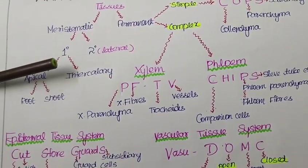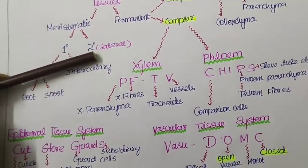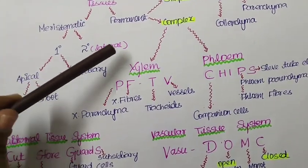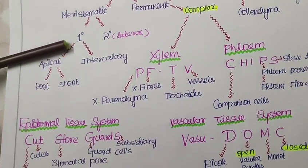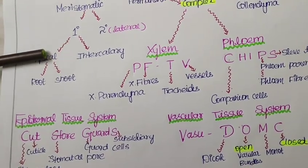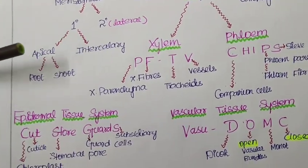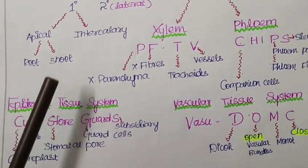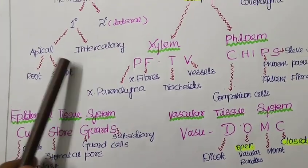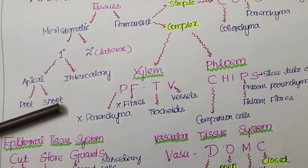The meristematic tissue is further classified as primary and secondary. The secondary is also called the lateral meristematic tissue. Now to talk about the primary tissue, we have another subdivision which is apical meristem and intercalary meristem. And the apical meristem is further classified into root apical meristem and shoot apical meristem. These are the classifications under meristematic tissue.